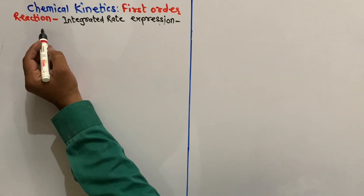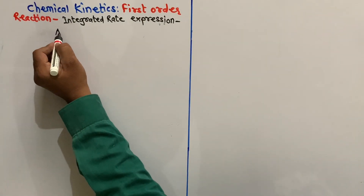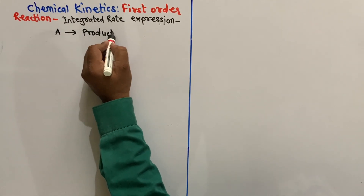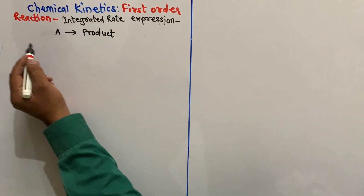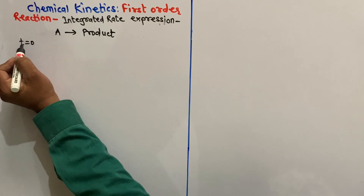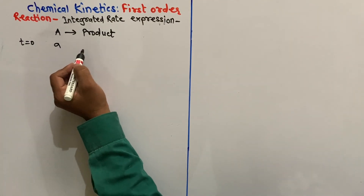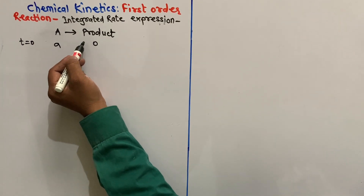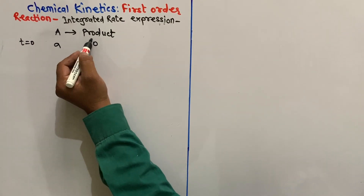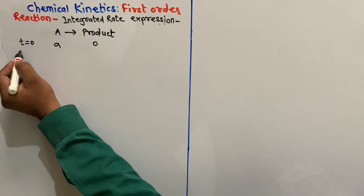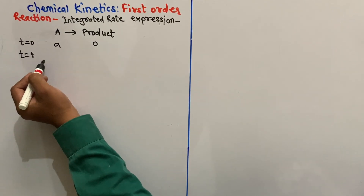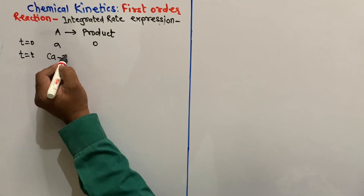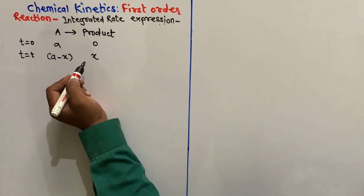Let us consider a reaction: A gives product. When time was 0, the initial concentration of A is a (small a) and that of product is 0. As the reaction proceeds, the concentration of A decreases and that of product increases. Let at time t, the remaining concentration of A be A minus x, and that of product is x.